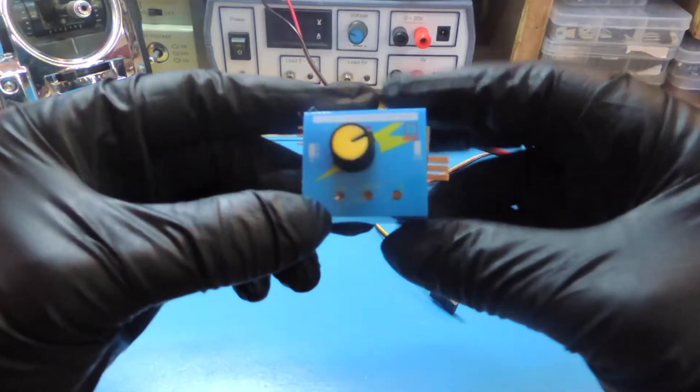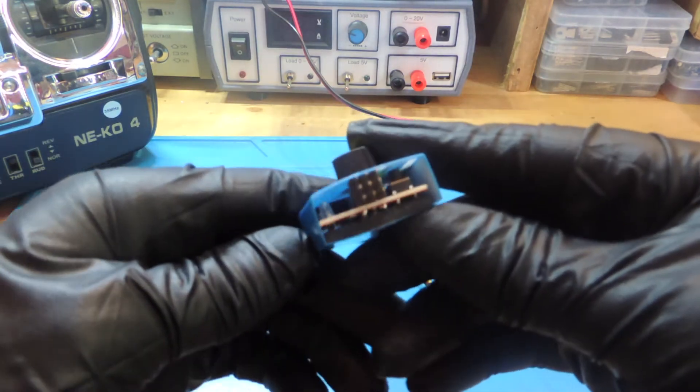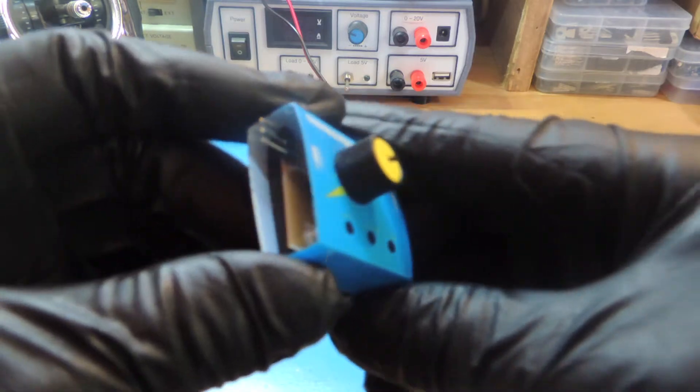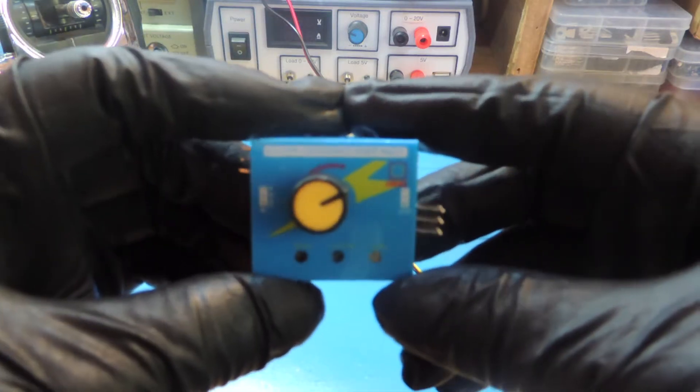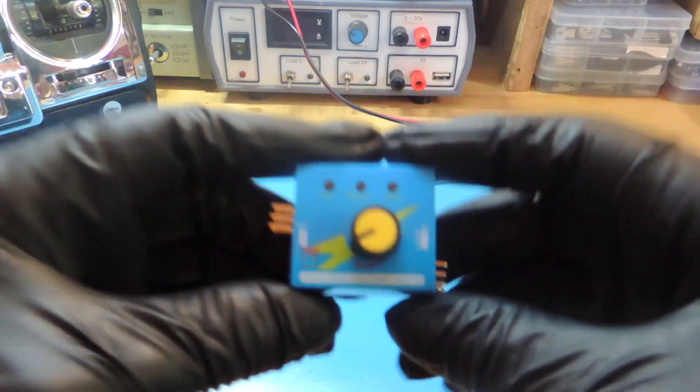The next way to test our servos is using one of those little boards. It's a servo tester. This specific one costs less than $2. So let's have a closer look.